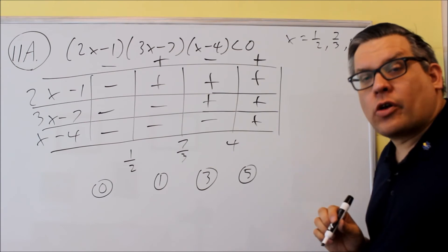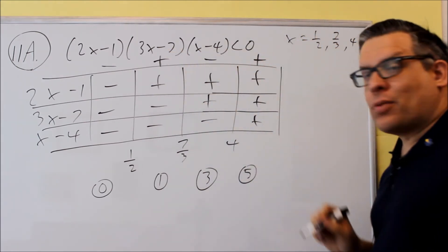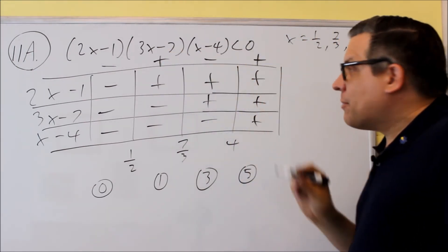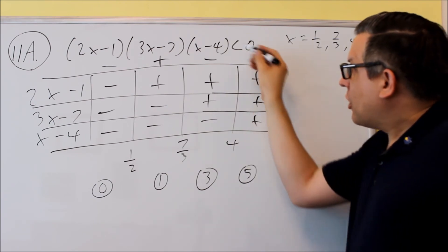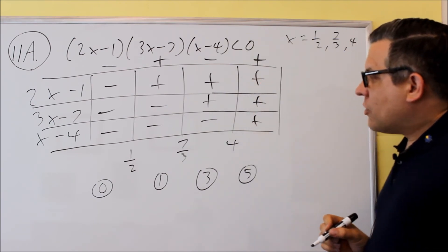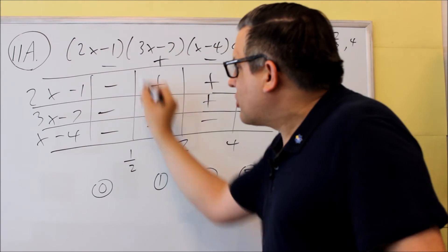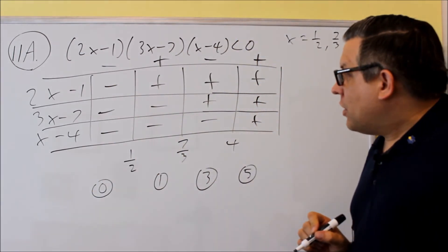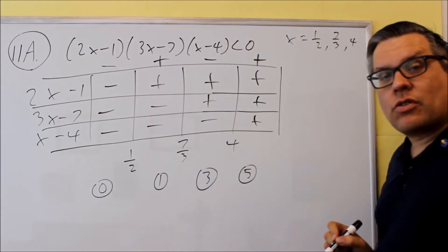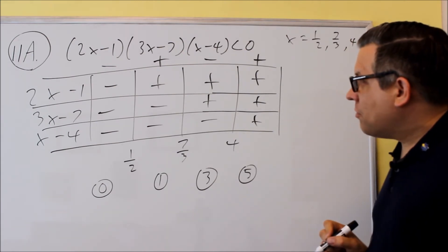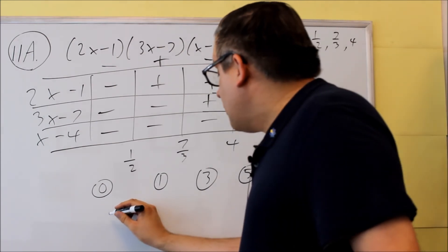If I see greater than or greater than or equal to, you're looking for where you see pluses across the top. So we're looking for negatives because we have a less than. So my answer is going to be this section up to negative one-half, and then the section between seven-thirds and four. So I'm going to do this here, I'm going to do negative infinity up to one-half,